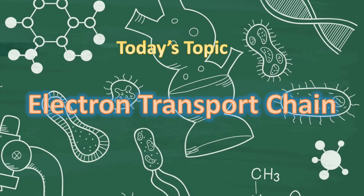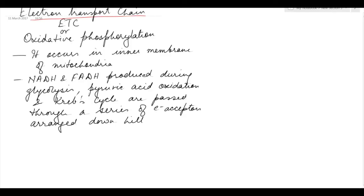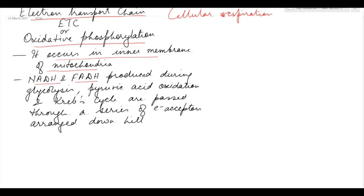Hello everyone. Today's topic is the electron transport chain, a part of cellular respiration. The electron transport chain is also known as oxidative phosphorylation. It occurs in the inner membrane of mitochondria. During this process, NADH and FADH2 produced during glycolysis, pyruvic acid oxidation, and the Krebs cycle are passed through a series of electron acceptors.